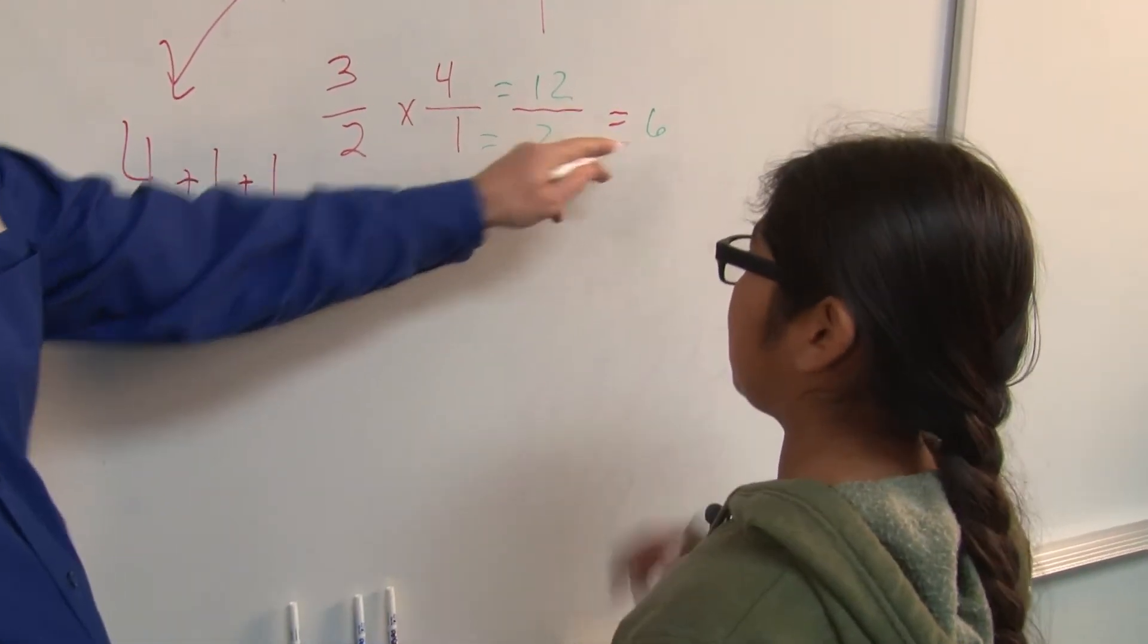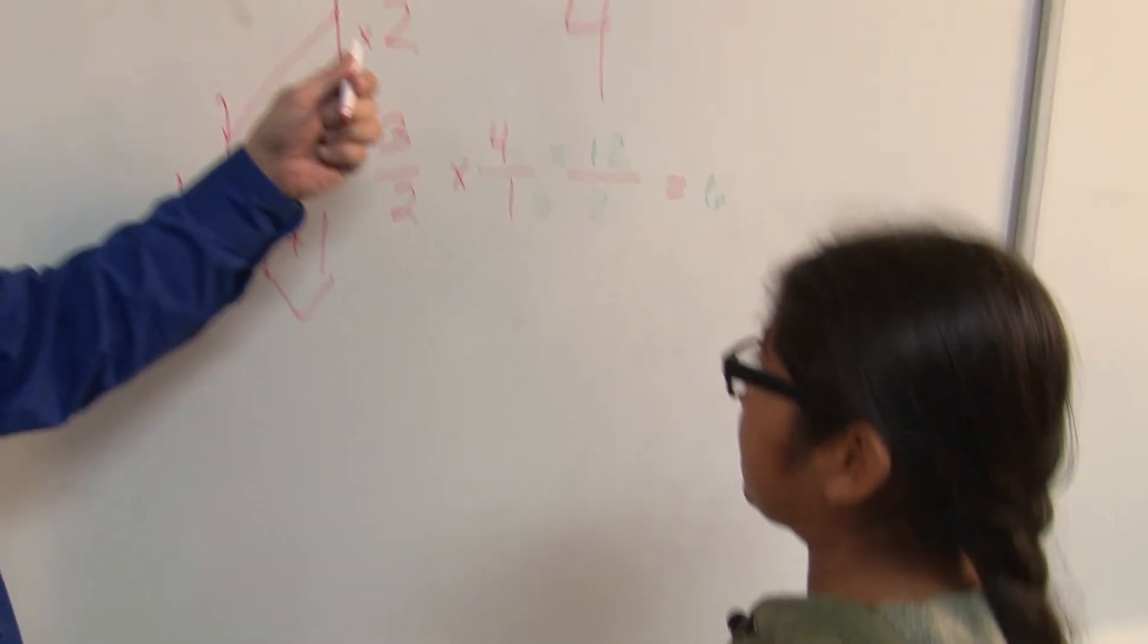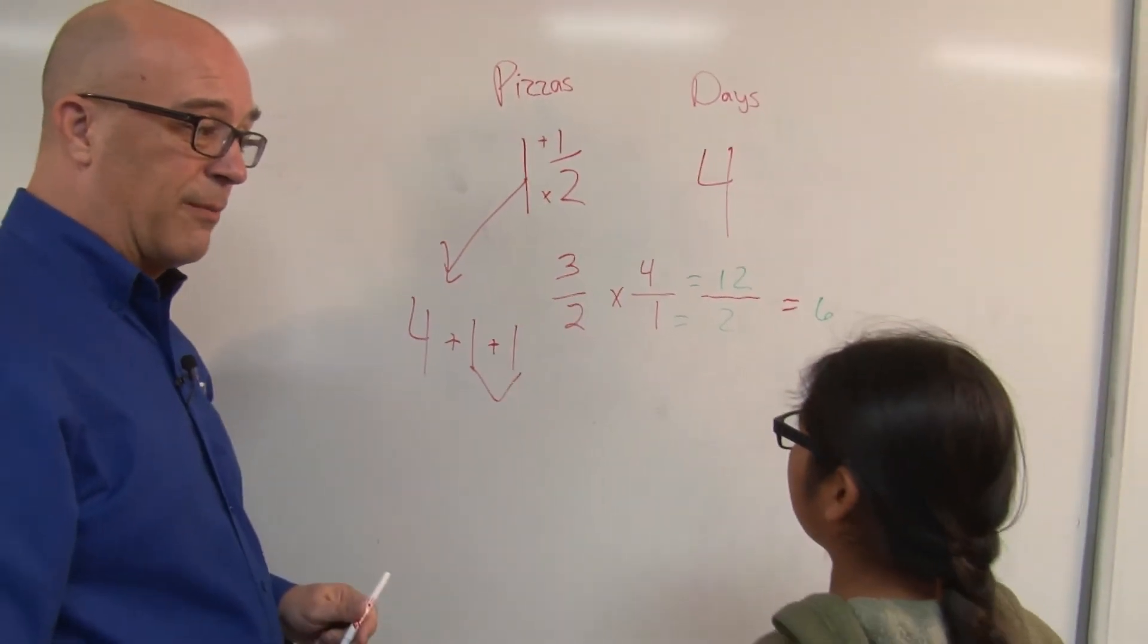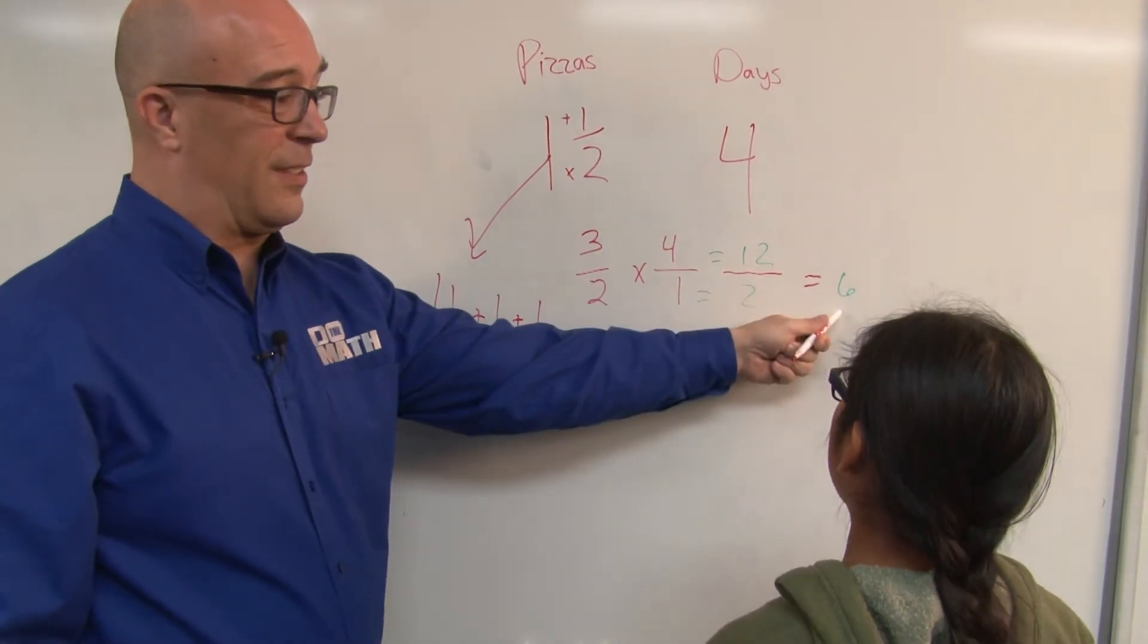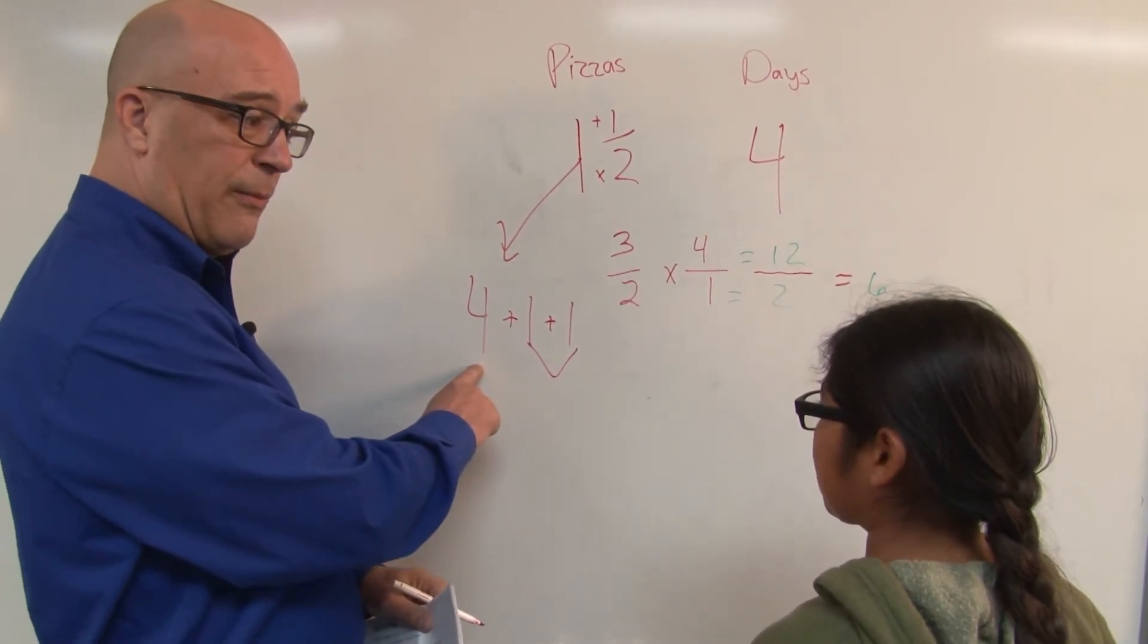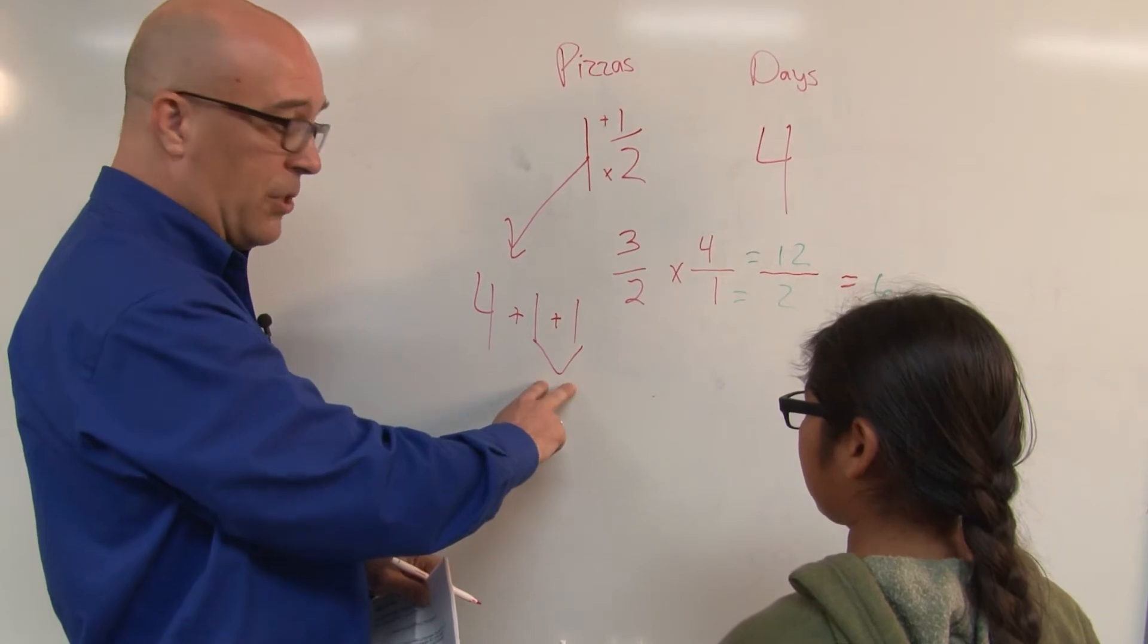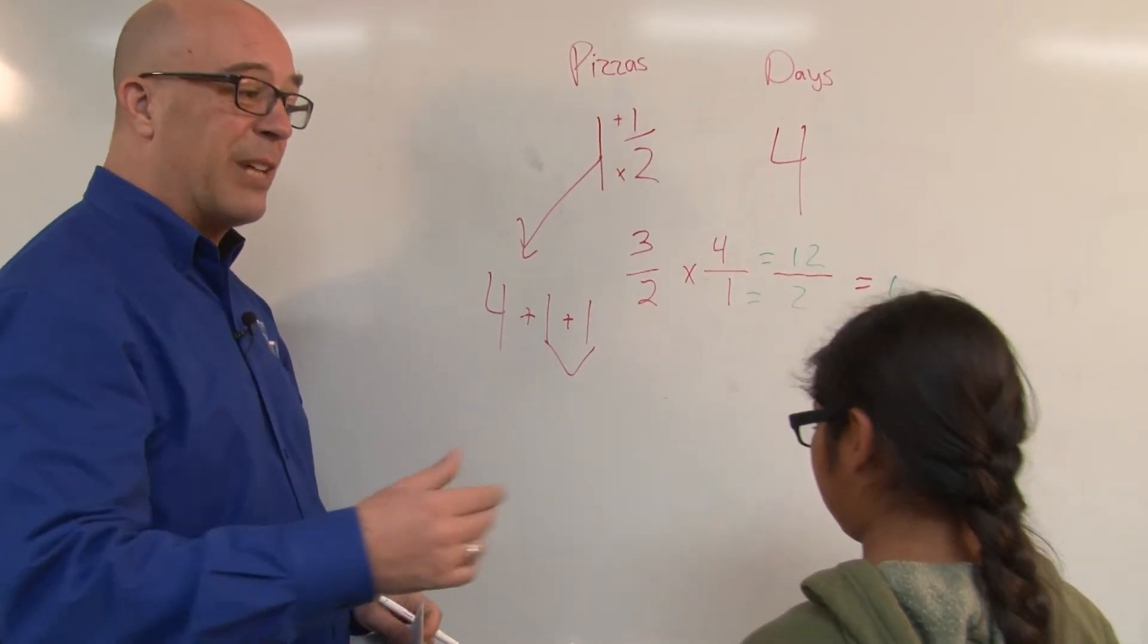6. There you go. 4 plus the 1 is 5, plus the other one is 6. So if you eat 1 and a half pizzas every day for 4 days, how many pizzas will you eat? For 4 days. 6. So 6 pizzas. Kind of makes sense a little bit? Yeah. Because if you eat a whole pizza, you're going to have 4, and the half pizzas together for 4 days are going to be 2 more. So that's why you've got 6 pizzas. There you go. Nailed it. Nicely done.